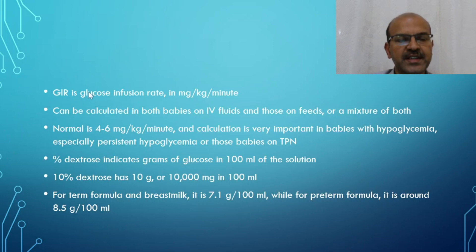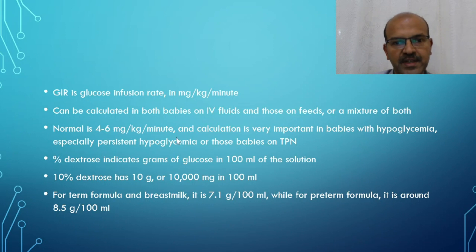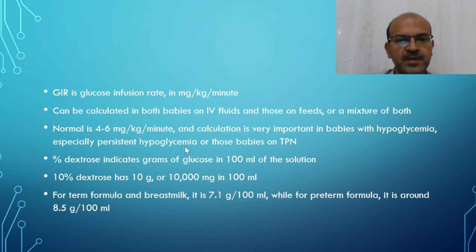Glucose infusion rate (GIR) is an infusion of glucose in milligrams per kilogram per minute, and it can be calculated in babies on IV fluids, those on feeds, or a mixture of both. The normal GIR is 4 to 6 mg/kg/min. This calculation is very important in babies with hypoglycemia, especially persistent hypoglycemia.